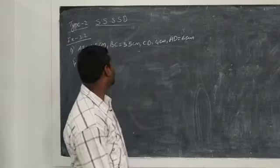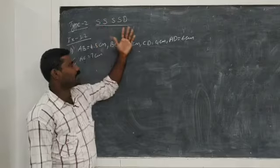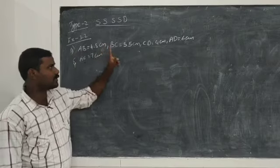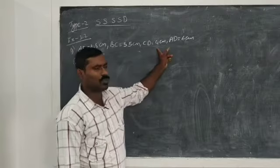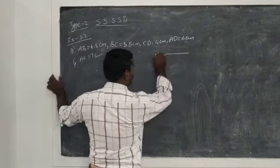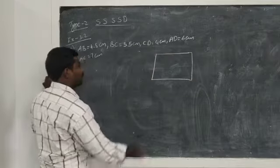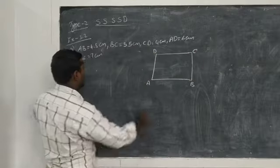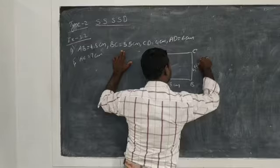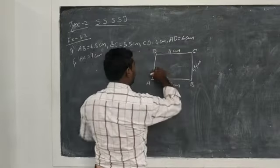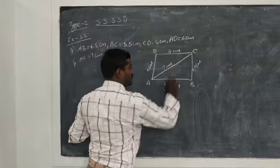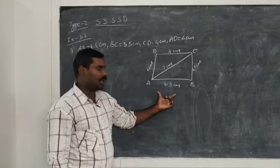Hi students. Today we are going to the second model of the quadrilateral when four sides and one diagonal is given. See here the exercise problem, Exercise 3, first problem: AB equal to 4.5 centimeters, BC equal to 5.5 centimeters, CD equal to 4 centimeters, AD equal to 6 centimeters, and the diagonal AC equal to 7 centimeters. Now draw the rough diagram. First we have to take the scale and draw one line segment.